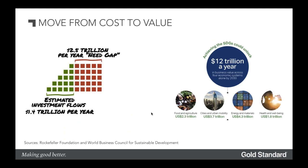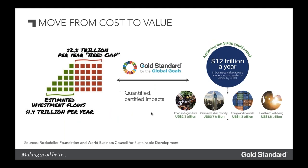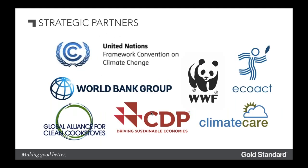One of the exciting aspects of GS for GG in unifying is it also allows us to start building a consistent language on the value of certified impacts. We've had an initial study on the economic value of sustainable development co-benefits and we're really looking to develop that — to actually create a system in the coming years that allows us to put that economic value and make it more practical to assess. Our ambition under GS for GG is to move in that direction.